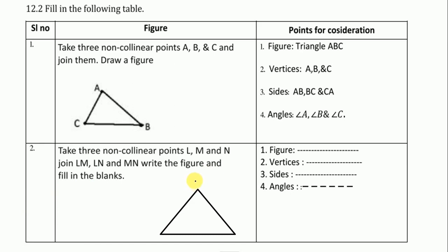So first we write figure, figure is triangle LMN. What are vertices? L, M, N - L comma M comma N. And sides are, we start from this side, LM, MN, last is LN. Angles are angle L, here is LMN, so we write angle L, angle M, and angle N.